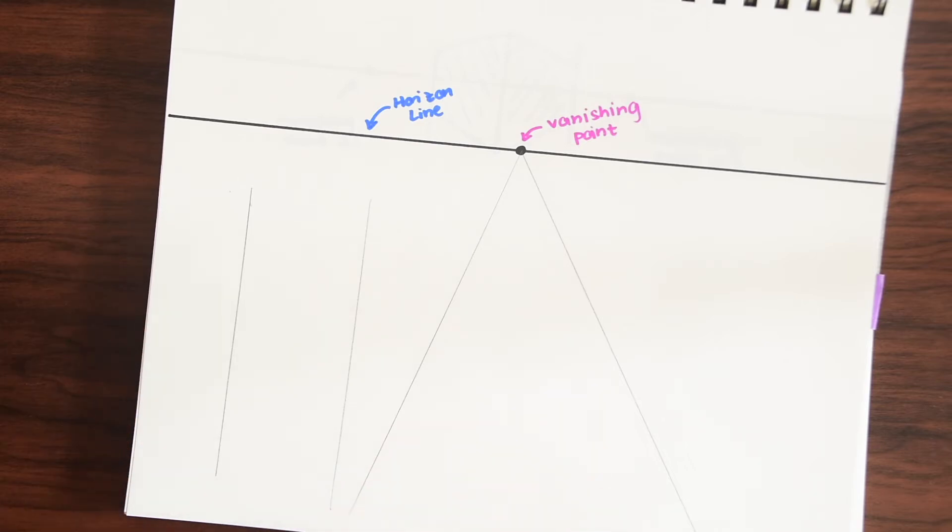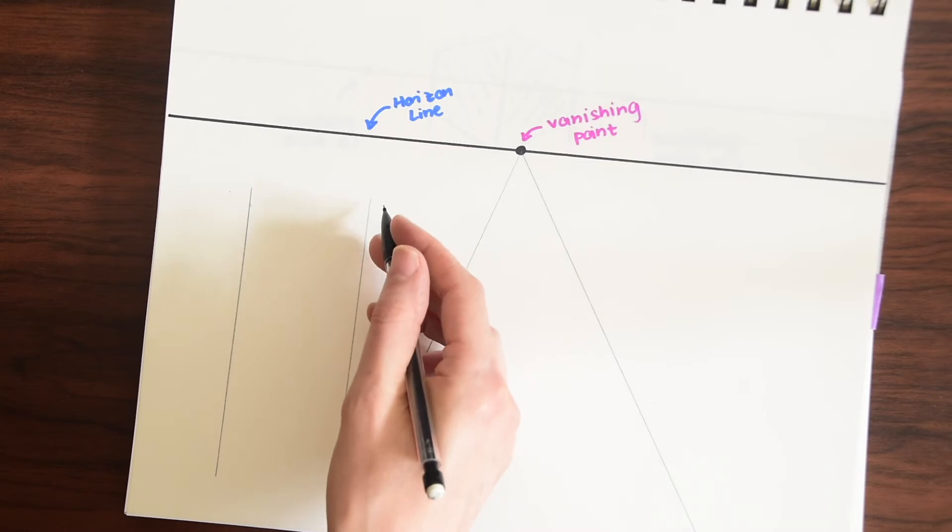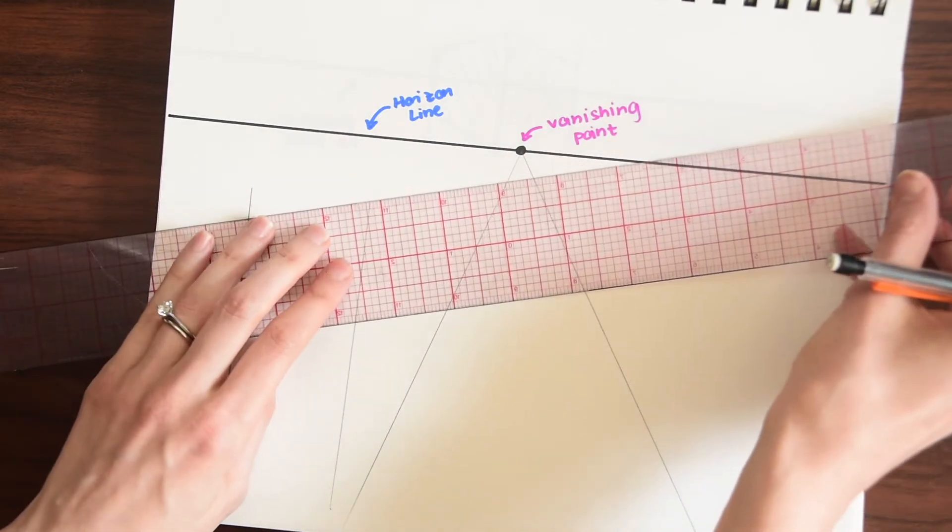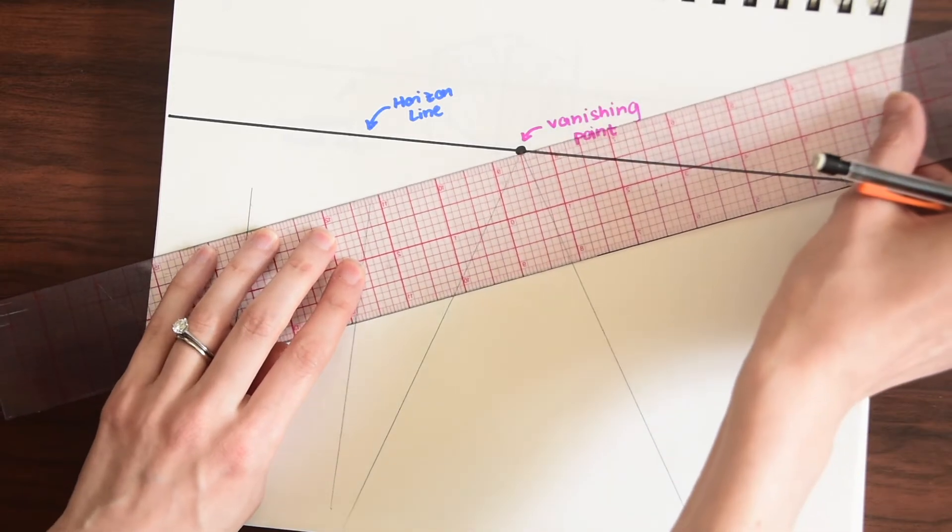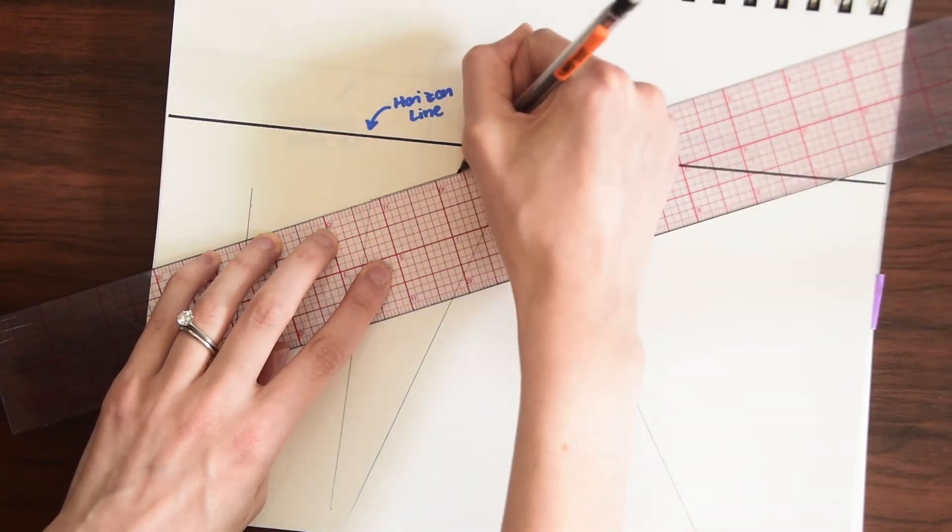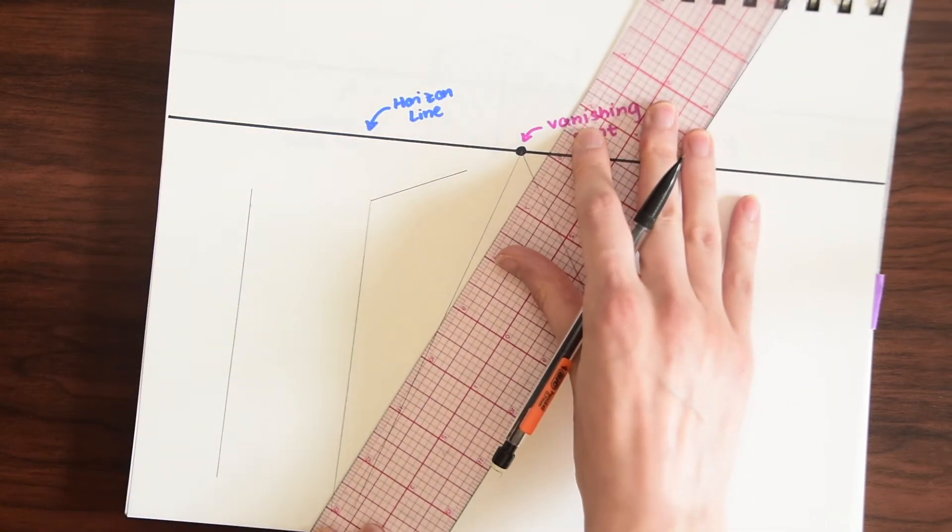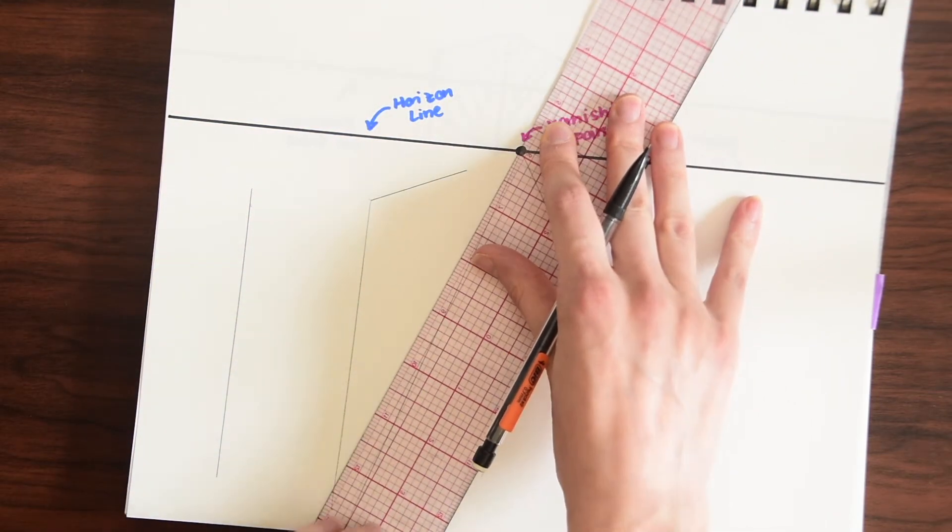So to do that we're going to be using our vanishing point. So all the lines from this building are going to go to this vanishing point the end points, so depending how big we want this building. So we can draw it there and then down here we're going to want to do the same thing.